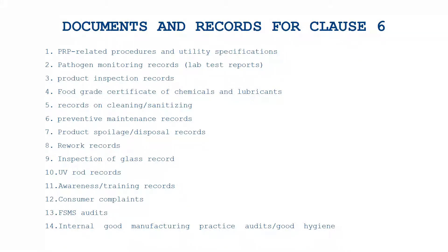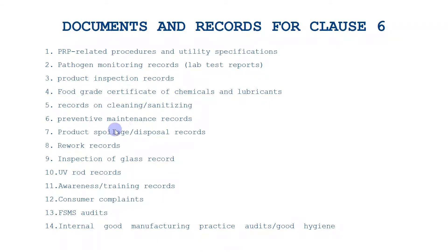We have finished all sub-clauses of clause six. Now let's discuss the most important point — documents and records required for this clause. These include: PRP-related procedures and utility specifications; pathogen monitoring records; lab test reports; product inspection records; food-grade certificates of chemicals and lubricants; records on cleaning and sanitizing; preventive maintenance records; product spoilage or disposal records; rework records; glass inspection records; UV rod records; awareness or training records specific to this clause; customer complaints; and internal audit records — FSMS audits and GMP audits, also called FSSC 22000 internal audit.